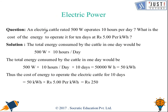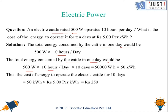An example: an electric kettle rated 500 watts operates 10 hours per day — what is the cost of energy to operate it for 10 days at 5 rupees per kilowatt-hour? The total energy consumed by the kettle is 500 watts × 10 hours per day × 10 days = 50,000 watt-hours. Dividing by 1000 gives 50 kilowatt-hours. Thus the cost is 50 kWh × 5 rupees = 250 rupees.